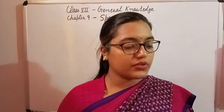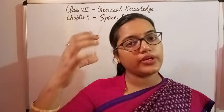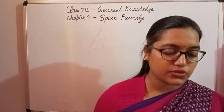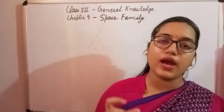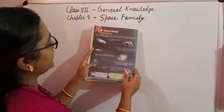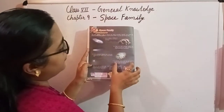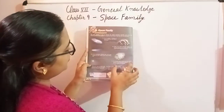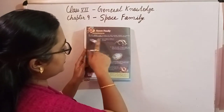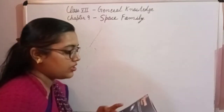Identify and name the following heavenly bodies by reading about them. Images and pictures of a few heavenly bodies are given to you. You need to identify them based on the help box and the description given. It is a fill-in-the-blank type question.